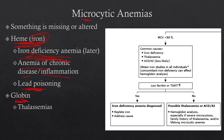On the other side — globin — there's really one big set of congenital disorders: the thalassemias. You can have alpha or beta thalassemia. These are basically mutations in the globin chain that inevitably cause the RBC to be smaller, giving you a microcytic anemia. There are many kinds of thalassemias, but think thalassemia when you see microcytic anemias.